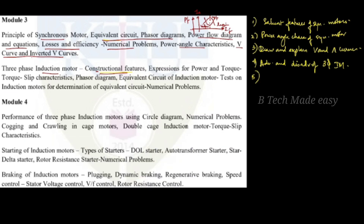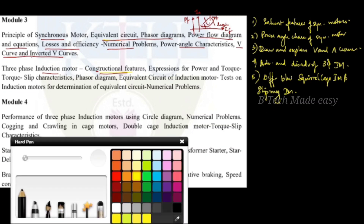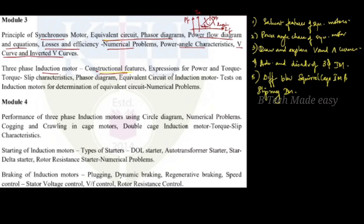We need to ask the difference between the squirrel cage induction motor and the slip ring induction motor. We also need to derive the expression for torque and power, and learn the expression for torque.